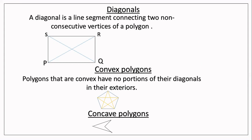Next is diagonals. A diagonal is a line segment connecting two non-consecutive vertices of a polygon. For example, in rectangle PQRS, PR and QS are the diagonals — that is, line segments connecting two non-consecutive vertices.